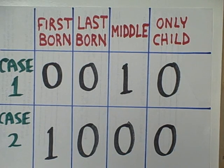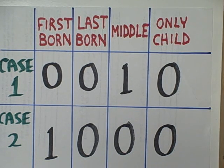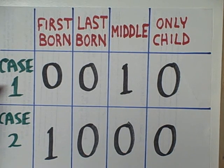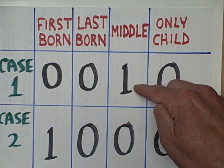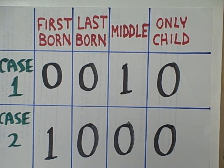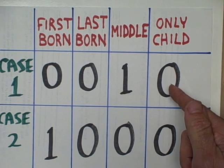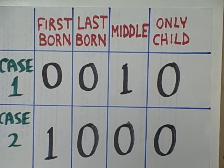Firstborn means that someone has younger siblings but no older siblings. Lastborn means that someone has older siblings but no younger siblings. Somewhere in the middle means a person has at least one older sibling and at least one younger sibling. And only child means that someone has no siblings. For our first case, imagine this person has an older brother and a younger sister — we would classify them as a middle child, entering a one in that cell. Because birth order is mutually exclusive, we enter zeros in the other three categories.